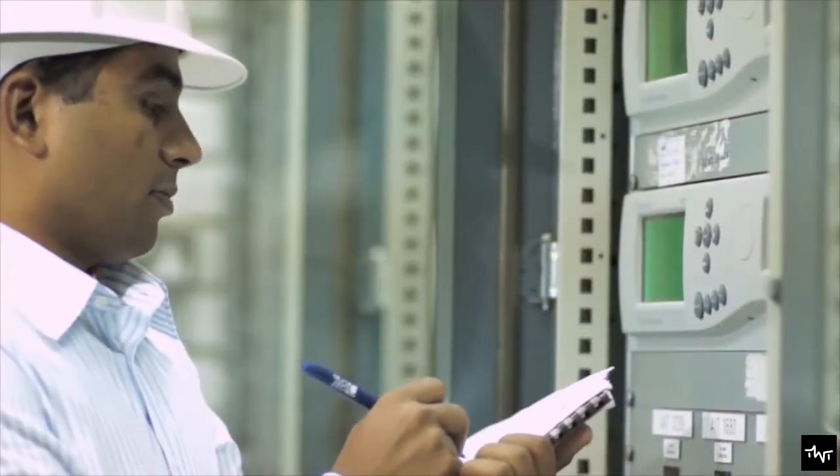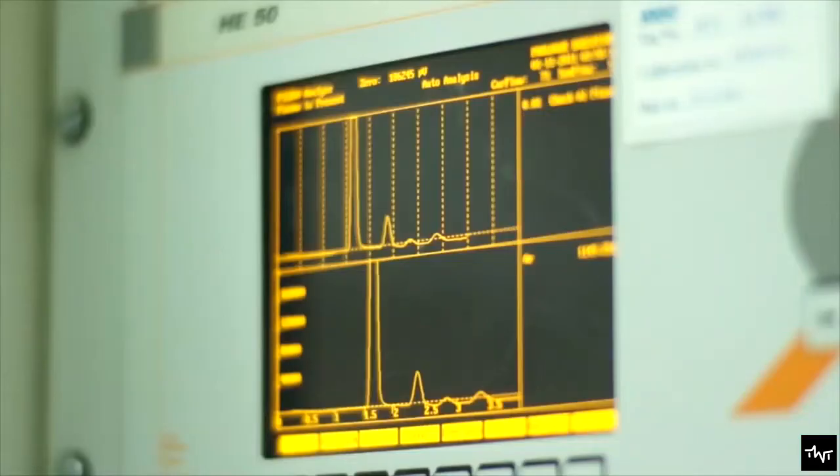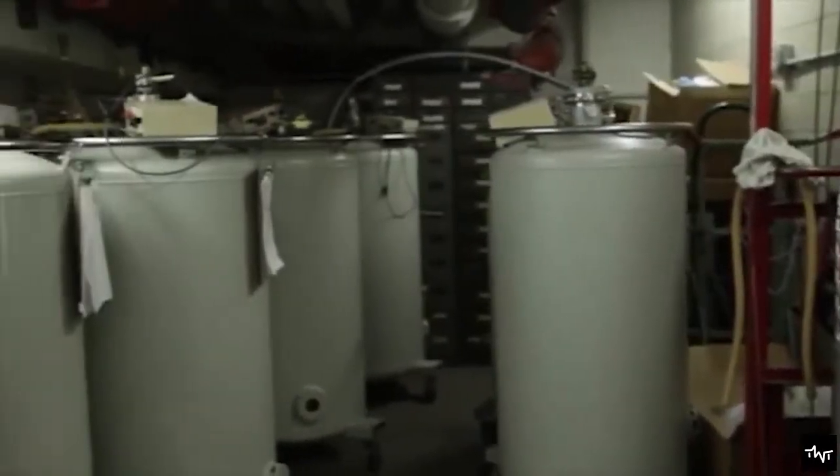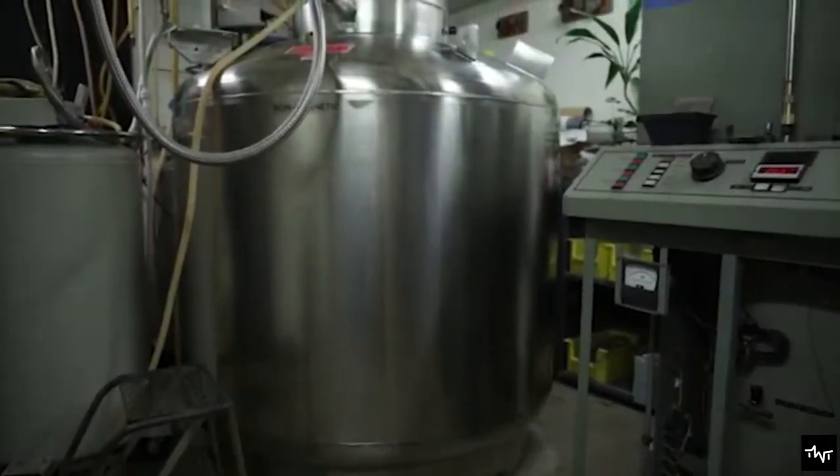Vacuum pressure swing adsorbers lower the pressure in the tank to subatmospheric values, thus improving the regeneration process. In both processes, while one tank is regenerating, another tank is usually charging. This allows for a continuous production of oxygen.